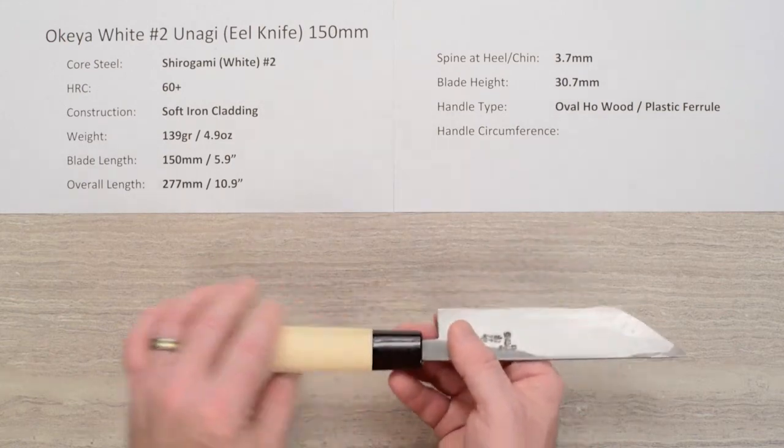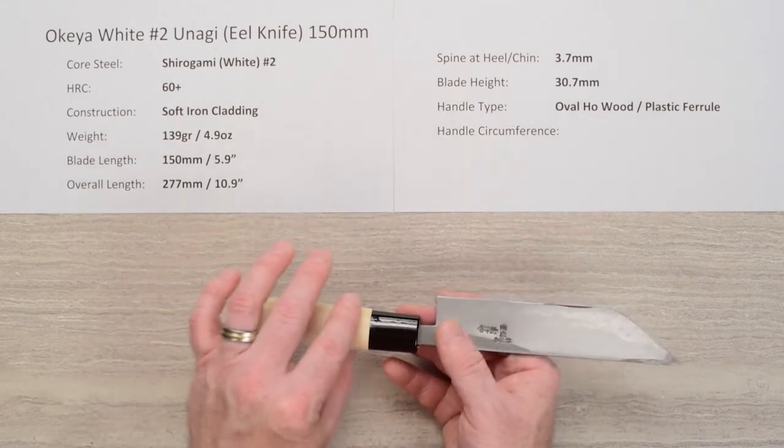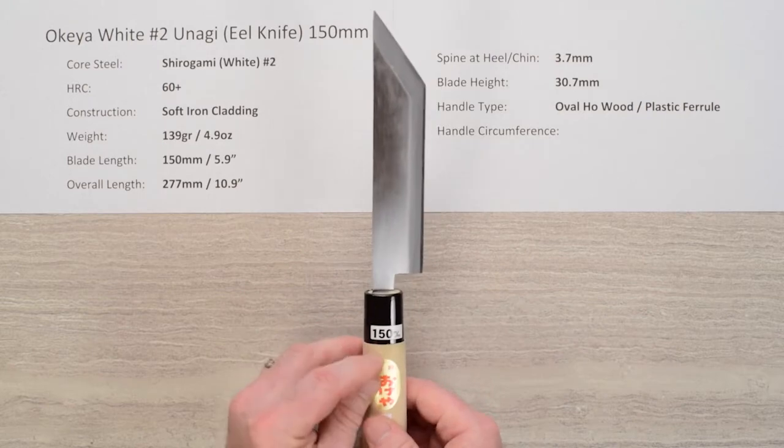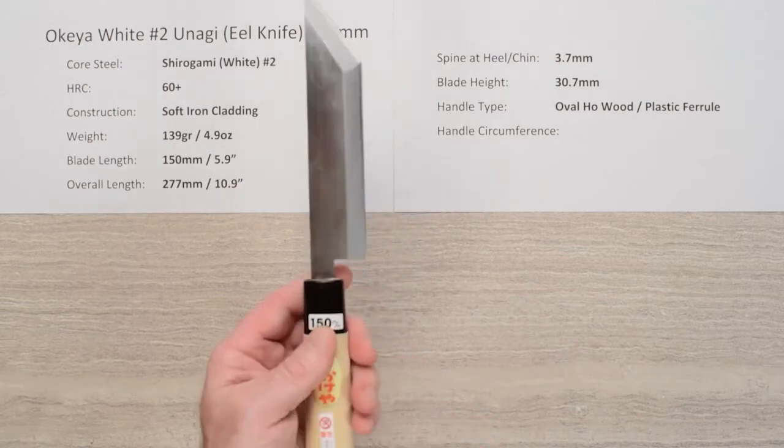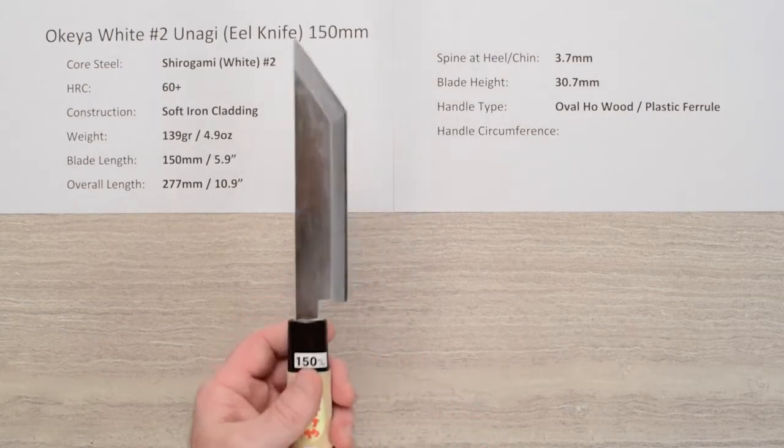The handle is a no-frills oval ho wood plastic ferrule with a bit of a step here between the wood and the plastic. Definitely a no-frills handle, nice and light.